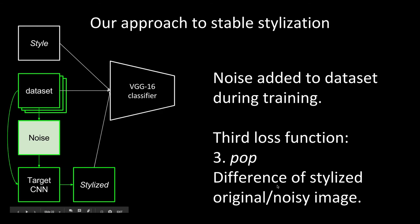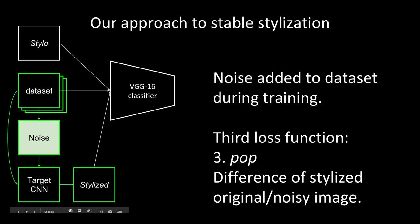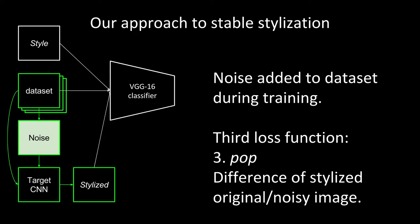Our approach to fixing this popping problem was to add noise to the dataset — a regularization solution. For each image in the dataset, we add noise and pass both the original and the noisy image through the CNN, giving us two sets of stylized images. We kept the original two loss functions and added a third: the difference in stylization between the original and noisy image. We're telling the neural network: if stylizing an image and adding a few noisy pixels gives a very different stylized image, that's not good — don't do that.